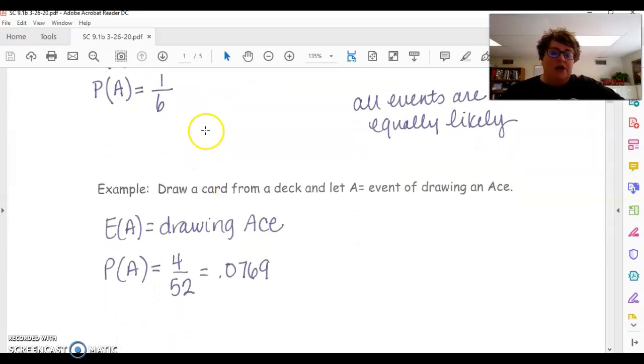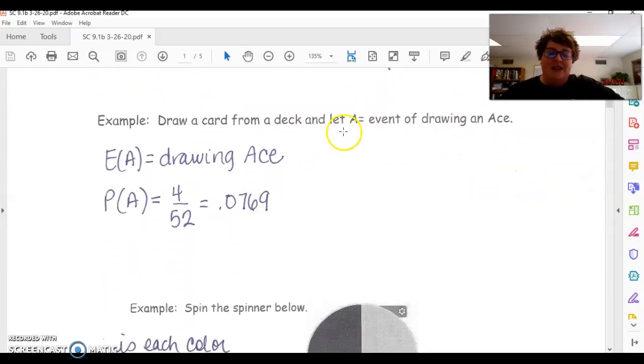So when we draw a card from a deck, let event A be drawing an ace. So for our event drawing an ace, we have 4 options to draw an ace out of 52 cards. So we have our probability is 0.0769. Remember, probability should always be less than 1, and if you are doing decimal points, always go to 4 decimal places.